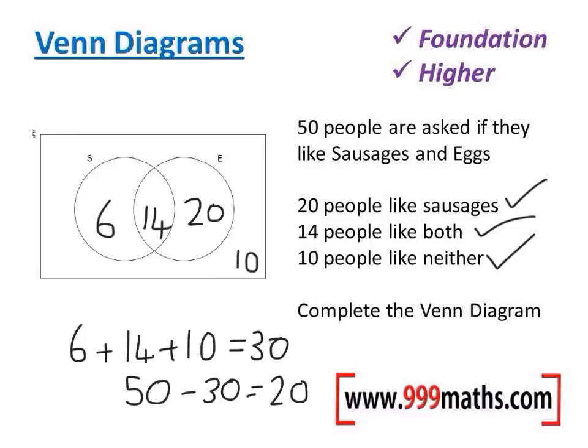I'll just double check that all those numbers work. 50 people altogether, yep. 20 of them like sausages, yep. 14 of them like both, yep. And 10 like neither. It's finished.